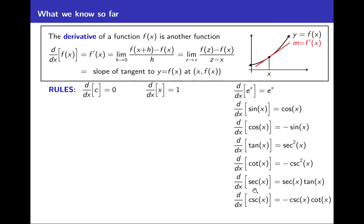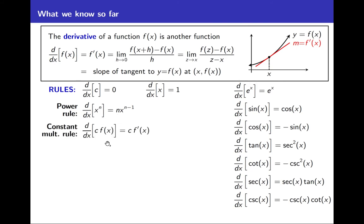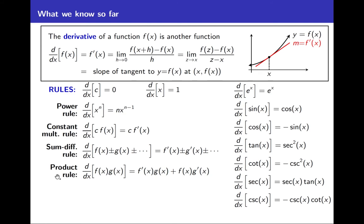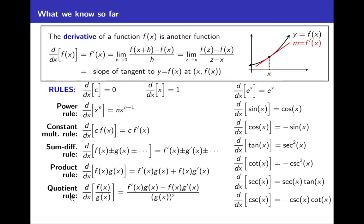So we had all of these rules for finding derivatives of specific functions. And then we had these more general rules that have names: the power rule — the derivative of x to the n is n times x to the n minus 1 — the constant multiple rule, the sum/difference rule, the product rule, and the quotient rule. Our purpose today is to come up with one more rule, called the chain rule, which gives us the derivative of a composition f of g of x.